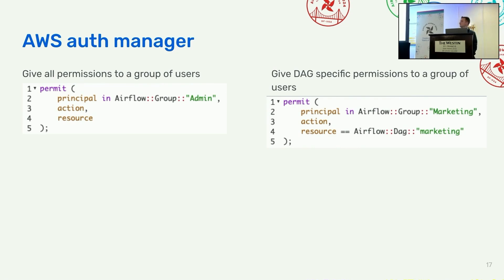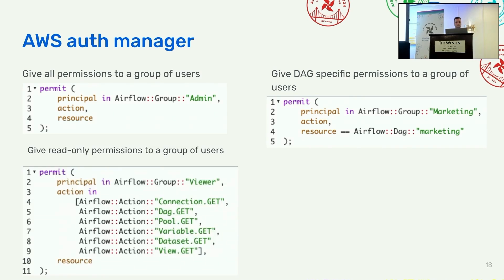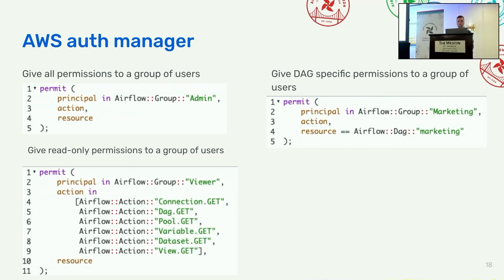As a second example, we want to give DAG-specific permissions to a group of users. We say any user that belongs to the group marketing can do any action, but only on the resource marketing DAG. The third example sets constraints on the action — giving read-only permissions to a group. Any user that belongs to the group viewer can do this list of actions: can read connection, can read DAG, can read pool, can read variable, can read datasets, and can read the view, with no constraint on resource.